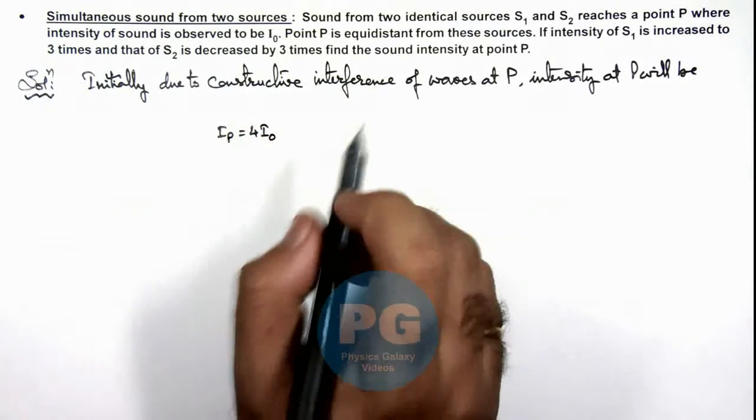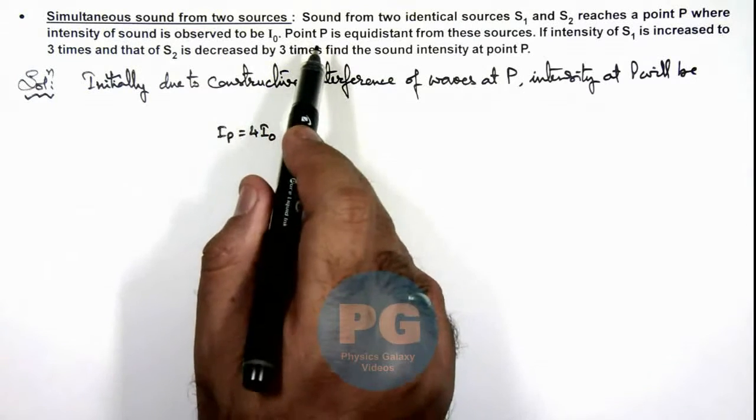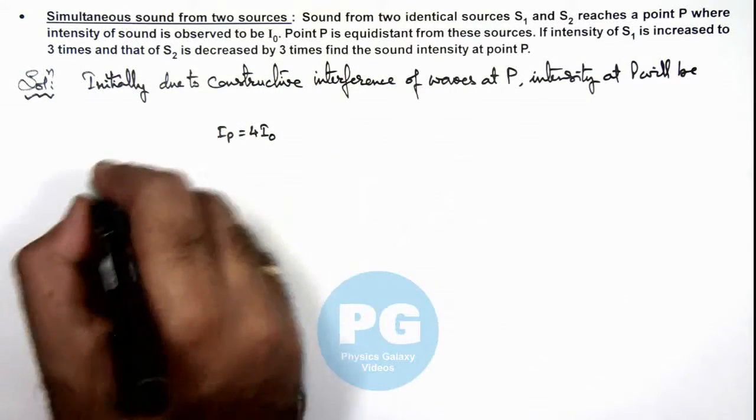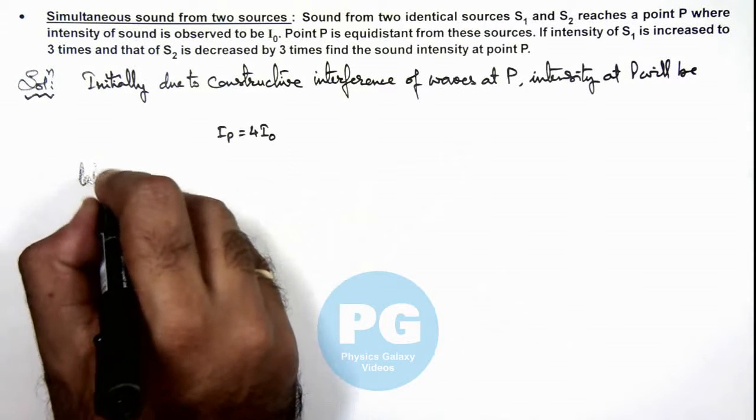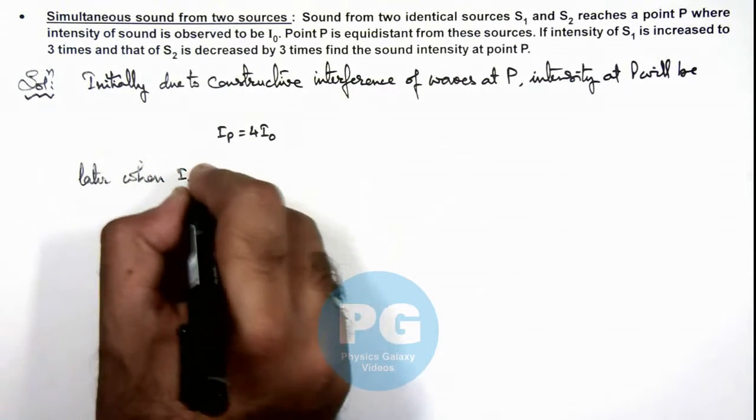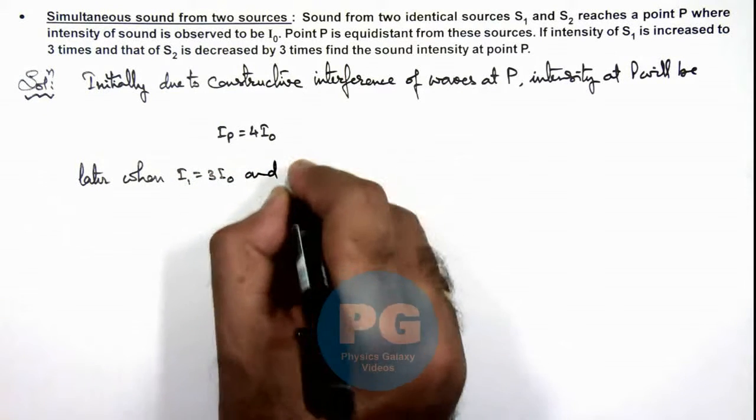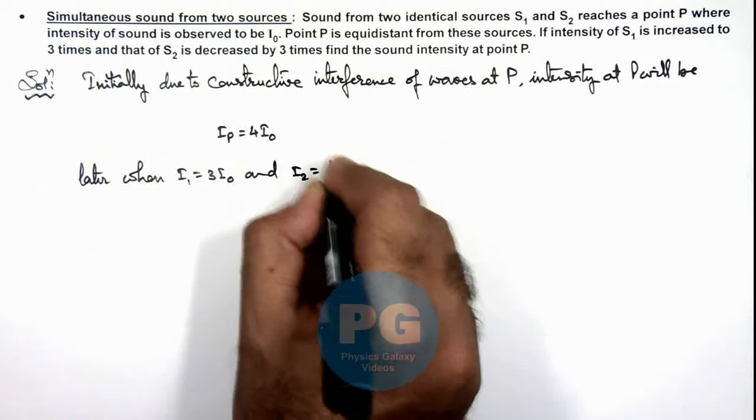And later when we talk about the intensity due to S₁ and S₂ at point P, then we can say later when I₁ becomes 3I₀ and I₂ becomes I₀/3, then we can write...